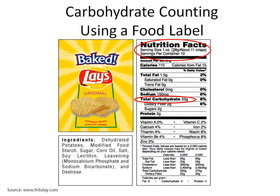The serving size listed on this label is one ounce. You may be asking yourself, what does one ounce look like? You can look at this and find that the weight of one ounce, or 28 grams, is about 11 crisps. We all know that these crisps can be broken in the bag and it may be difficult to count out 11 crisps.